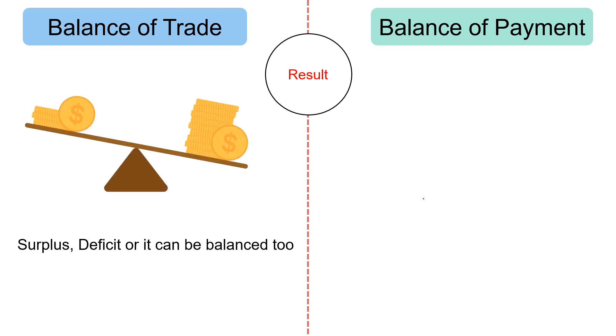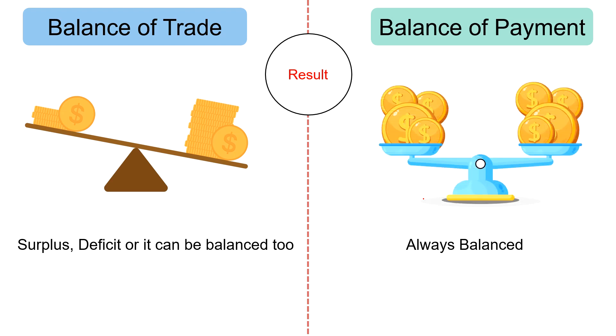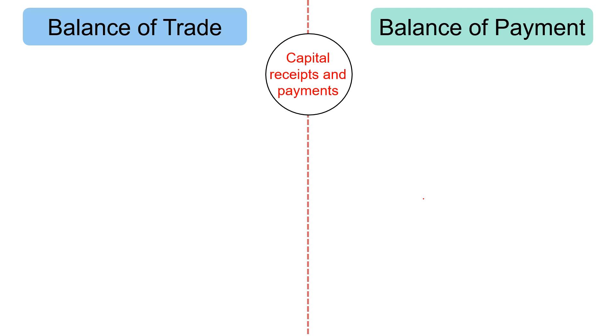Balance of trade indicates surplus or deficit, or it can be balanced too. On the other hand, balance of payment is always balanced — that is, the receipt side is made equal to the payment side.